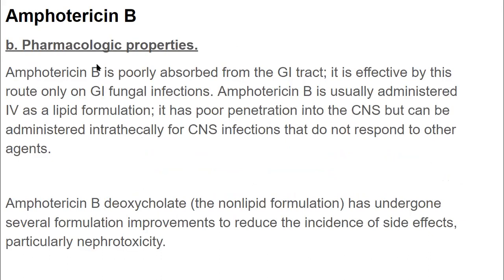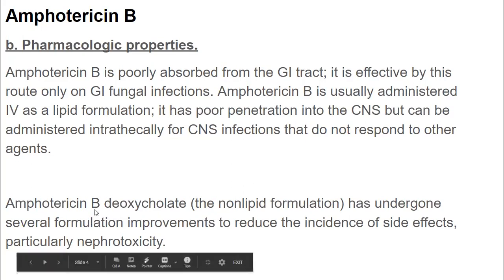Regarding pharmacological properties: amphotericin B is poorly absorbed from the GI tract because it is polar, so it is effective by this route only for GI fungal infections. It is usually administered IV as a lipid formulation to enhance absorption. It has poor penetration into the CNS but can be administered intrathecally for CNS infections that do not respond to other agents.